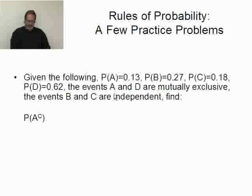Now, we know that A and D are mutually exclusive. So A and D are ME, mutually exclusive. And we're told that B and C are independent. Keep that in mind.